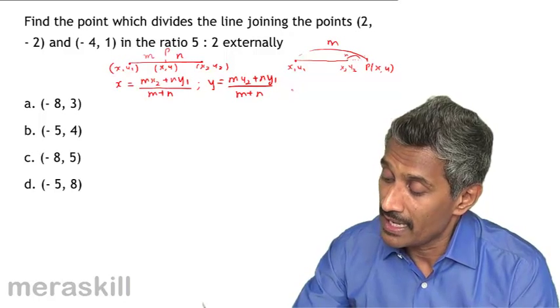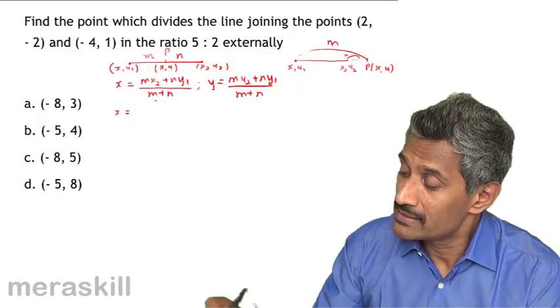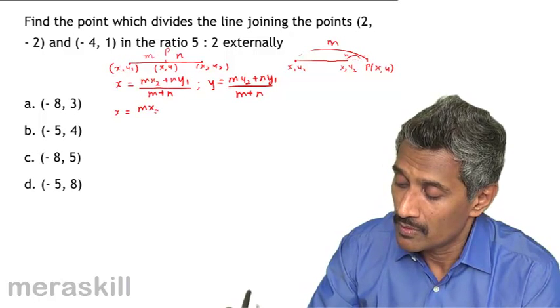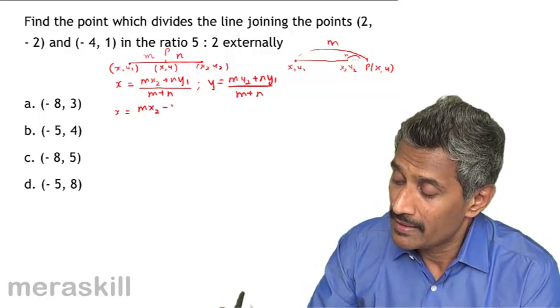In that case, the coordinate of P, that is x, would be given as M x2 minus N x1 upon M minus N.